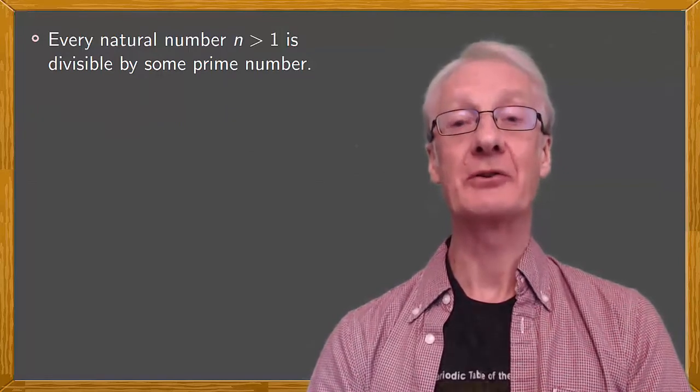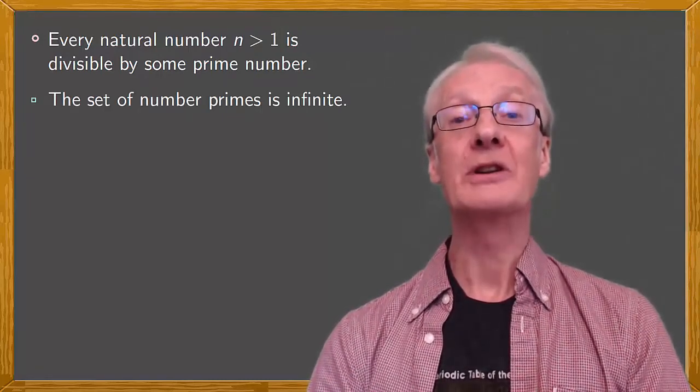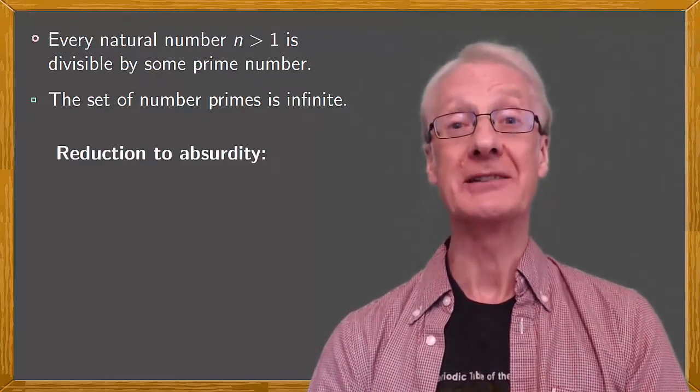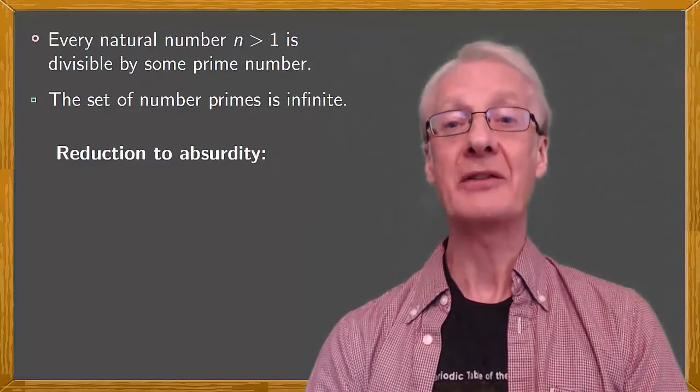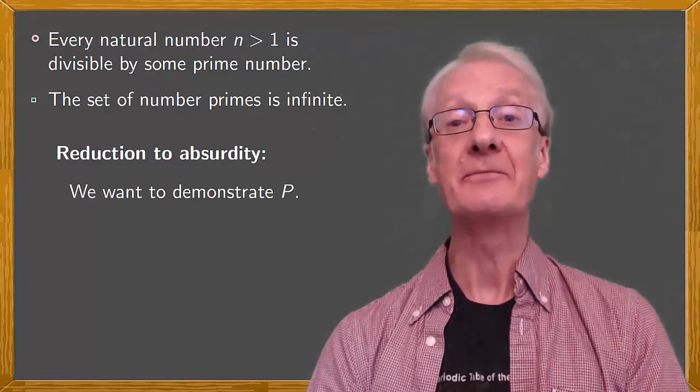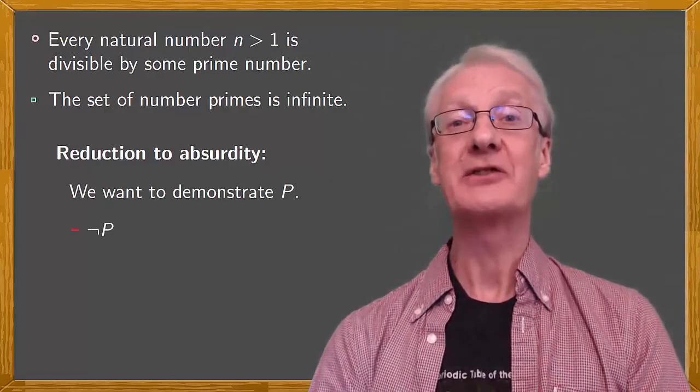Now to demonstrate our result, that the set of prime numbers is infinite, we'll use an important method of proof known as reduction to absurdity. The basis of this method is that if we want to demonstrate a proposition P, we suppose that the opposite, not P, is true.